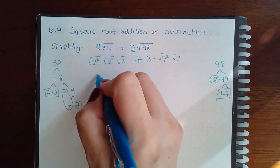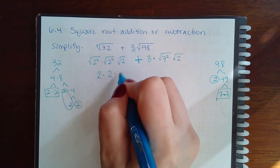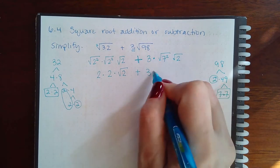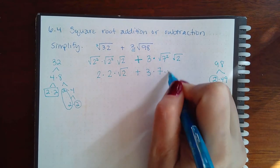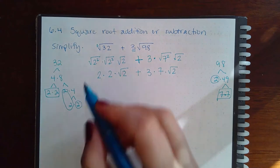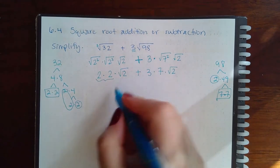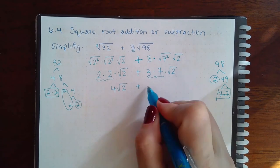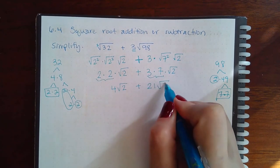So here these cancel, I get two. This cancel, I get two, and here I still have the square root of two. Here these cancel and I get seven. I still have the square root of two. So when I multiply the outsides together I get four square root of two. When I multiply these outsides together I get 21 square root of two.